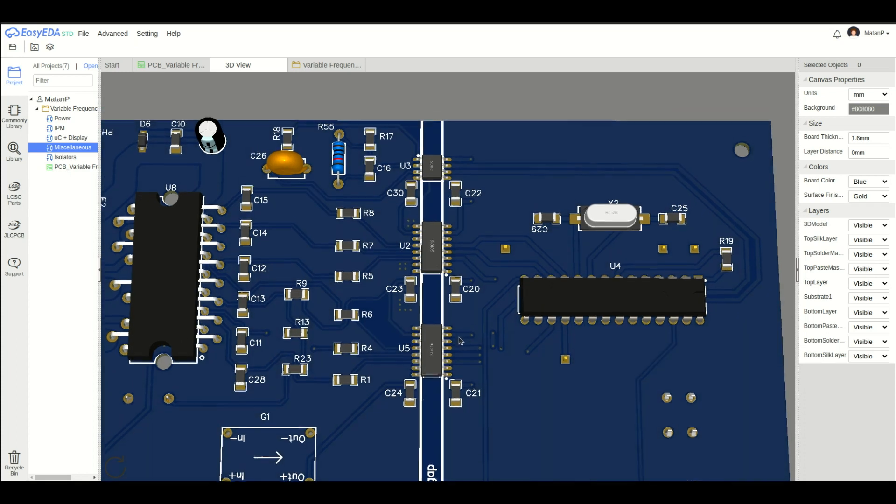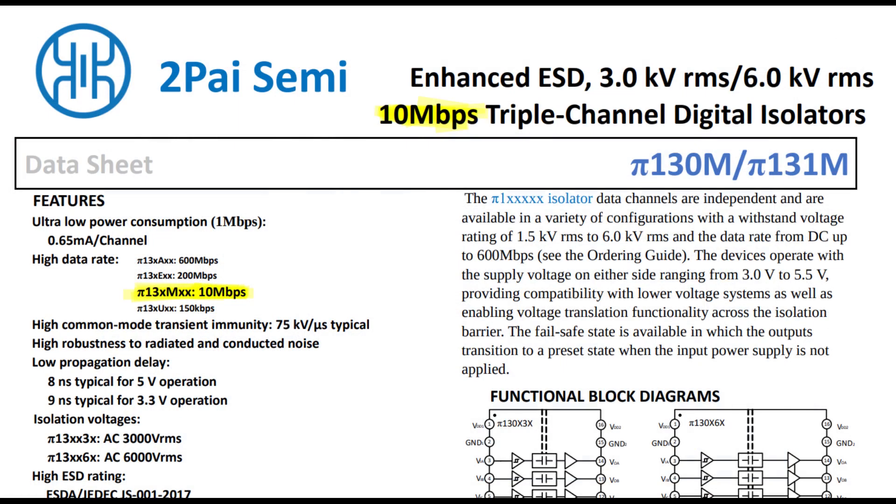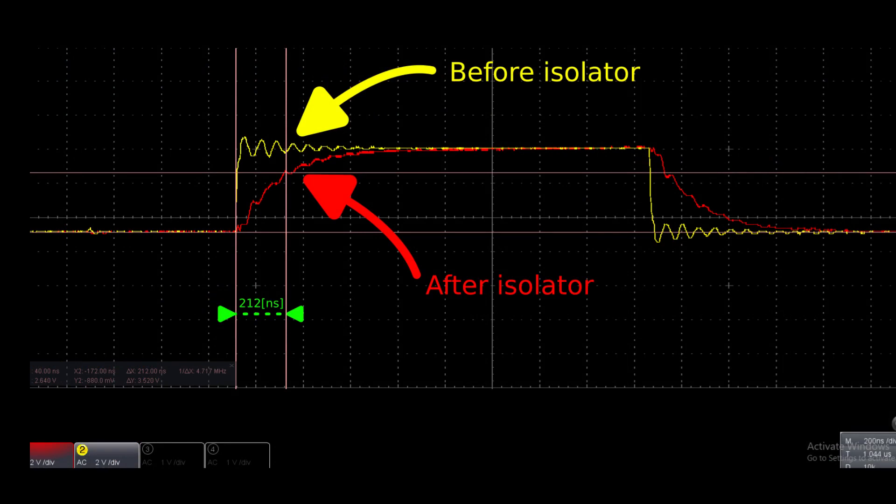For the PWM signals, I need a relatively high bandwidth isolator to not skew my signals too much. The isolators I chose have a bandwidth of 10 Mbps. Here's an image showing a signal before and after the isolator. You can see it's like passing the signal through a low pass filter. The rise time is delayed by at least 200 ns. So I had to account for that when choosing the inverter dead time. I'll go into more detail about that in the software video. That's it for the low voltage side.